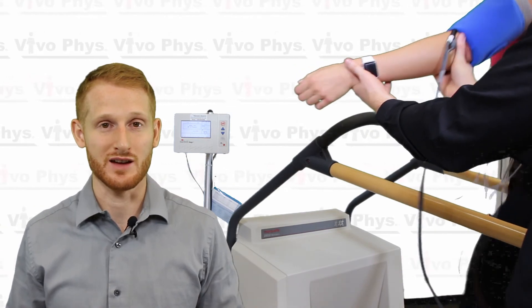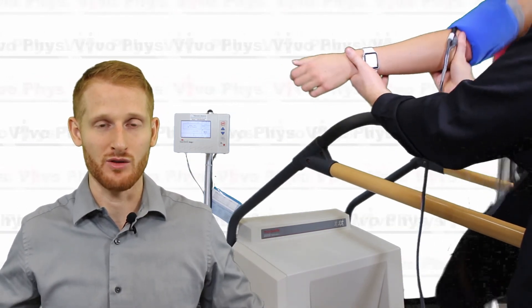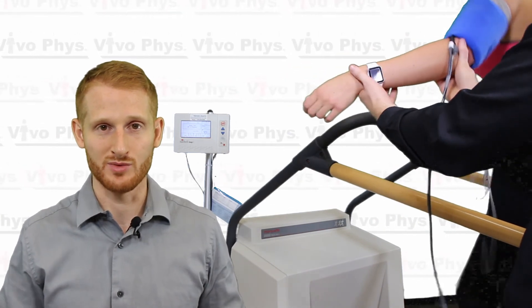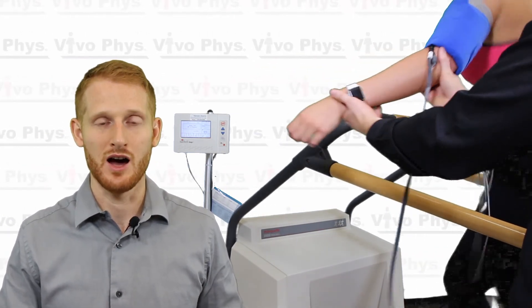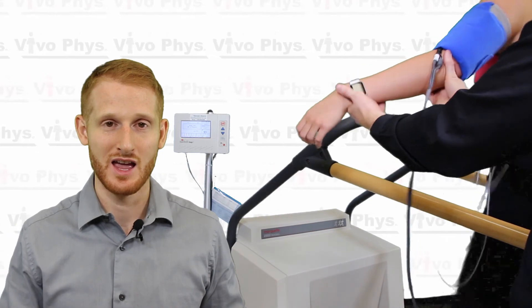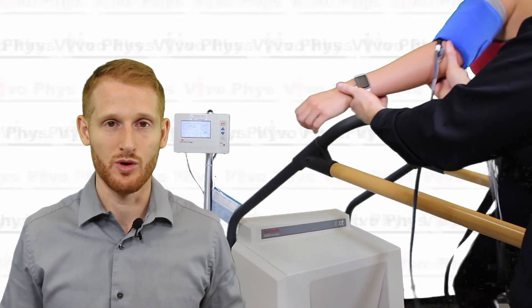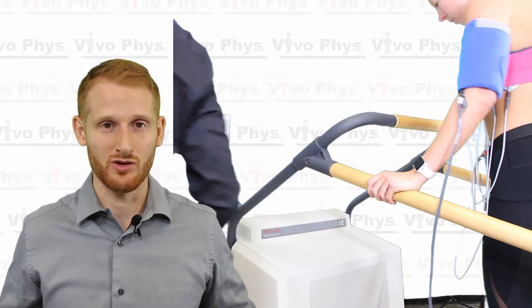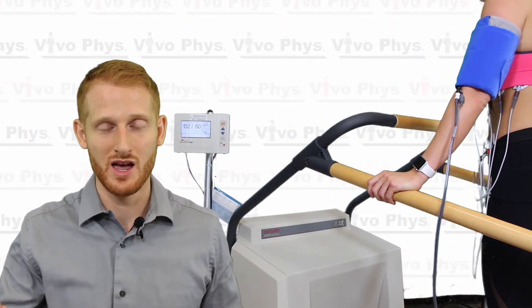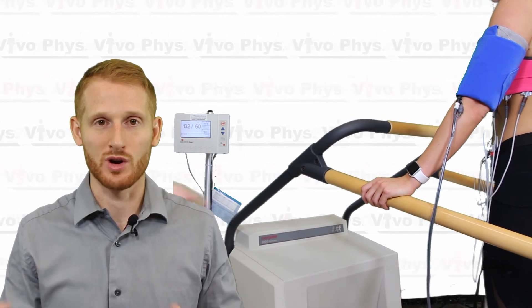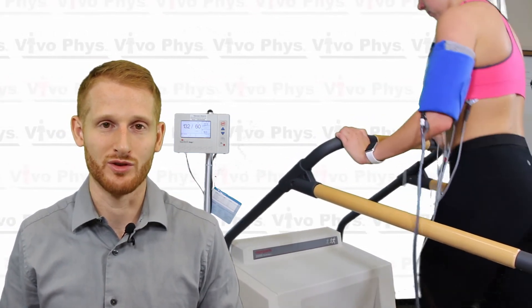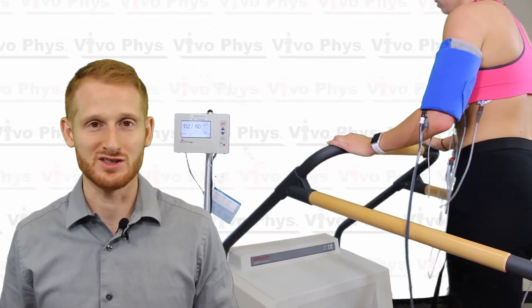When you get to peak exercise, when they grab and straddle the belt, always make sure that you get all those measurements I listed. So RPE, an ECG tracing as well as a blood pressure measurement. I recommend doing all those immediately after they've grabbed and straddled the belt and after the ECG signal has become much more clean. That's going to give you the best signal that you can use so that you can try to interpret whether there's changes with exercise.